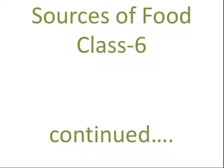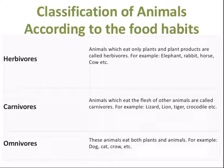From now on we will study our next topic: classification of animals according to their food habits. Basically we classify animals on the basis of what they eat and how they eat. Since animals cannot prepare their own food, they depend directly or indirectly on plants for food.